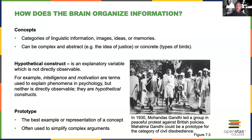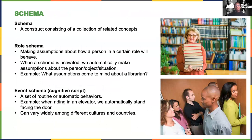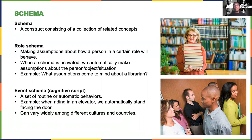Another way the brain organizes information is through schemas. A schema is a construct consisting of a collection of related concepts, and they often make us behave in automatic ways. For example, a role schema is when you make an assumption about how a person will behave because of their job or the role that they play — you think their personality or behavior is going to be a certain way.